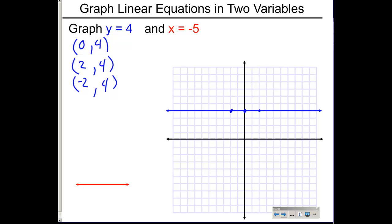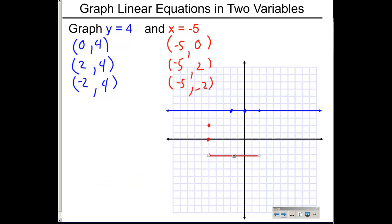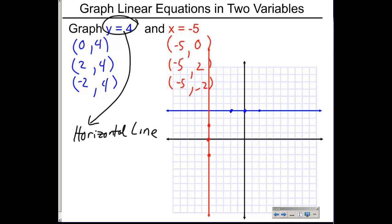For x equals negative five: every point must have an x-value of negative five. You can pick any y-values — let's use zero, two, and negative two. Plotting (-5, 0), (-5, 2), and (-5, -2) — you'll notice this creates a vertical line. When you have y by itself equaling a number, you have a horizontal line. When you have x by itself equaling a number, you have a vertical line.